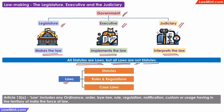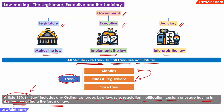The term 'law' includes statutes and also includes the other items listed in Article 13(a) of the Constitution, which says that law includes any ordinance, order, by-law, rule, regulation, notification, custom or usage having in the territory of India the force of law. In other words, laws include the statutes which are made by the legislature. To implement these statutes, the executive makes some rules, regulations and orders, which are also laws. And when there is a doubt, a dispute, ambiguity or confusion regarding the law, the judiciary will interpret the law, and this interpretation results in case laws. So when we look at the big picture, all three branches — the legislature, the executive, and the judiciary — are making laws.